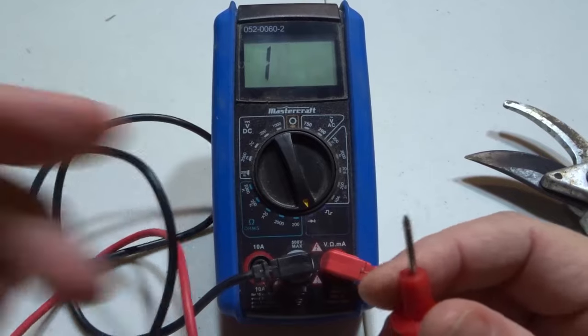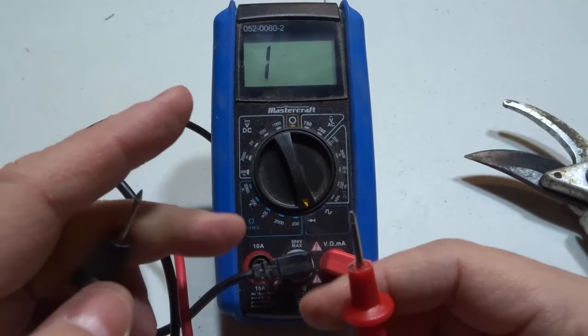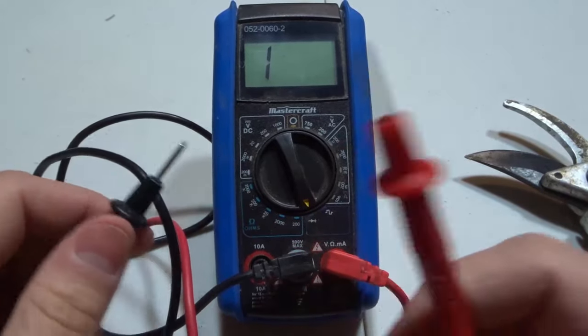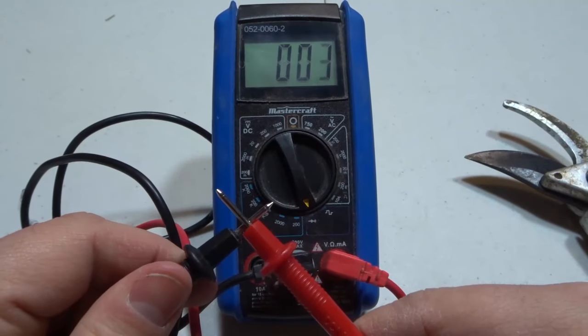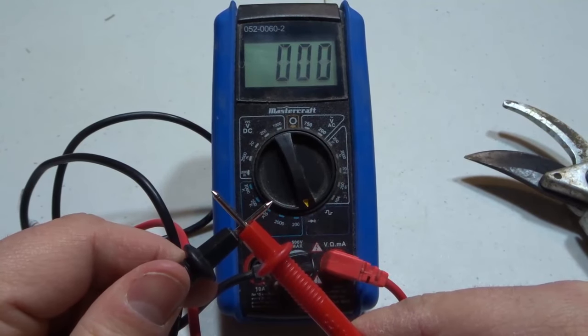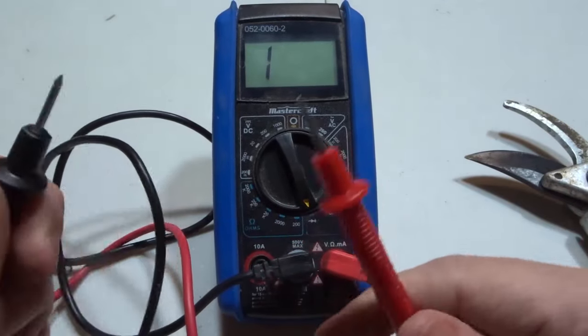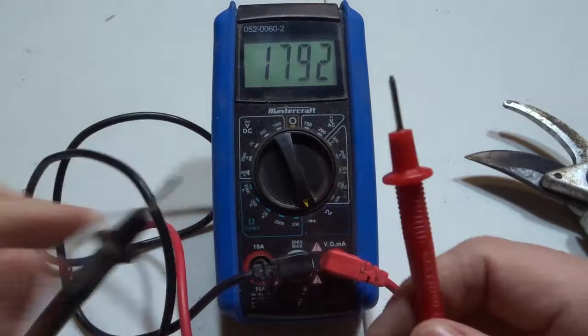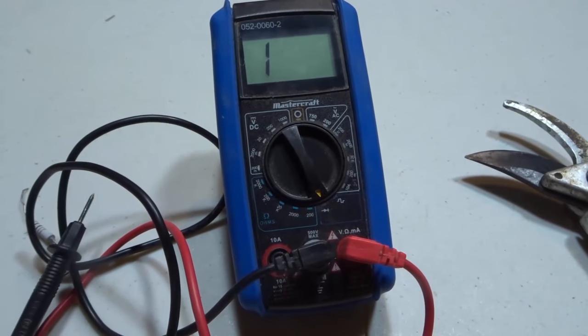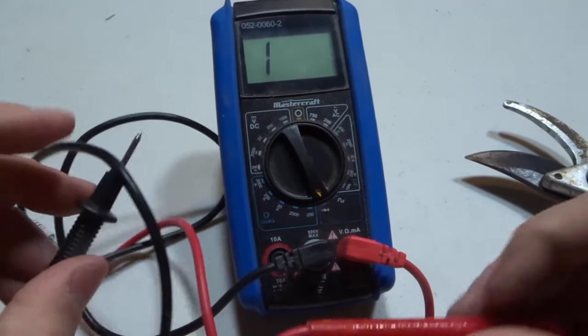But essentially if you see a number it means there is some resistance. But that's it, that's the basics of checking for continuity with a multimeter. It's very simple. You see a number like zero or a number, it means that there is continuity. If you do see a number it could also mean that there's a lot of dirt built up on the wire that you're checking the continuity for, and that's another thing that might happen because that would cause resistance.